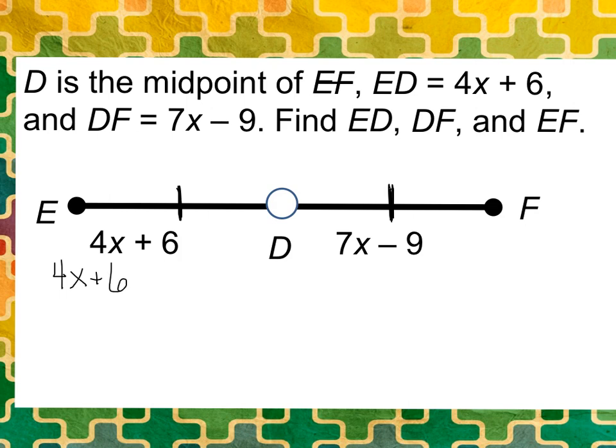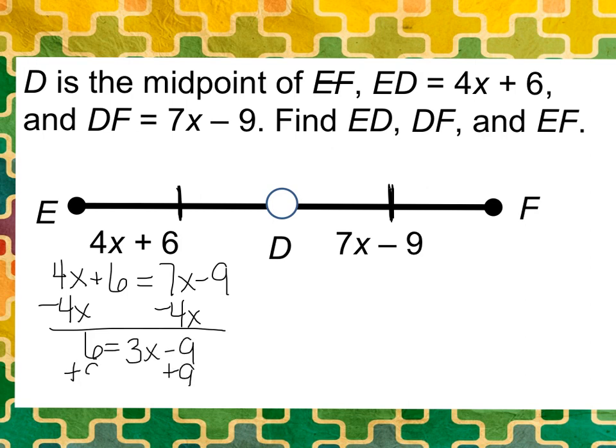So we're going to set equal the two expressions and get 4X plus 6 is equal to 7X minus 9. Now variables on both sides. I'll solve by first getting all variables to one side. So subtract 4X and I get 6 equals 3X minus 9. Add 9, add 9, get 3X equals 15, and then X is going to equal 5.